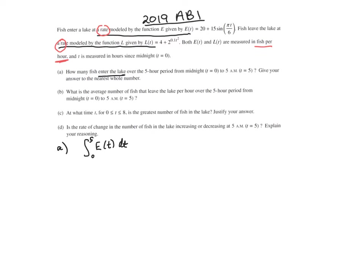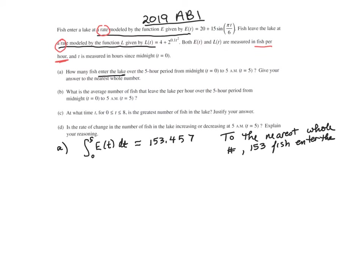We put this into our calculator, and our answer is 153.457. But to the nearest whole number, the answer is 153 fish that enter the lake from midnight to 5 a.m.